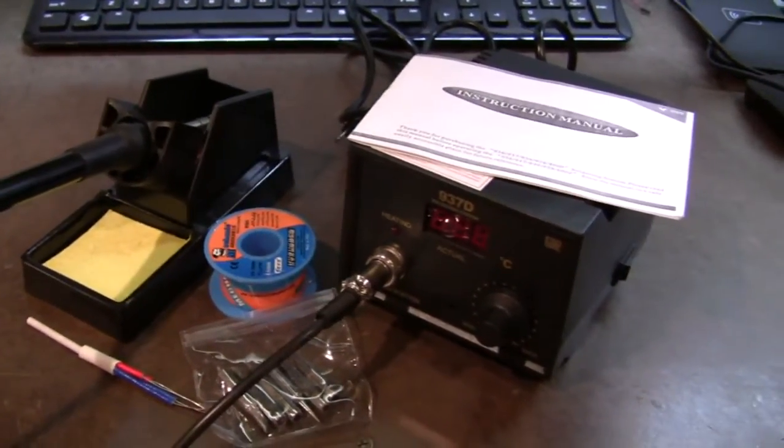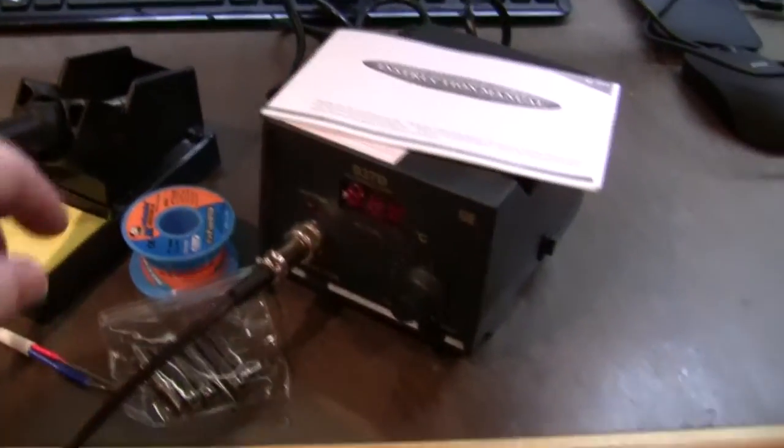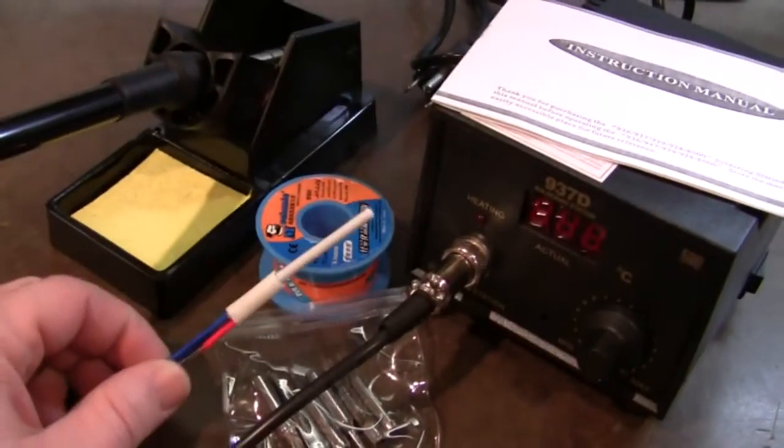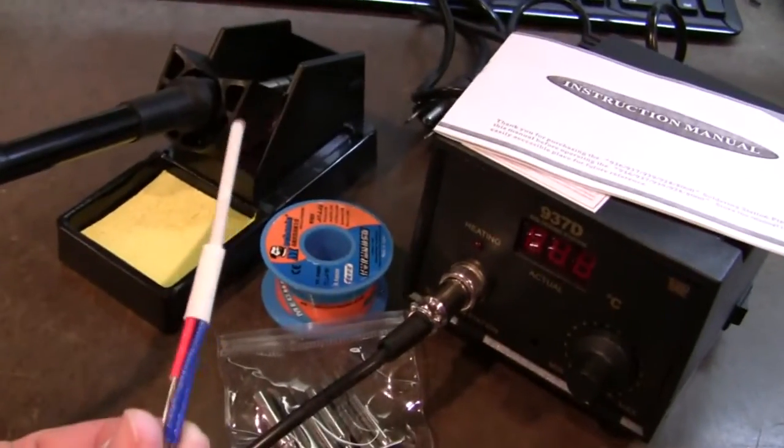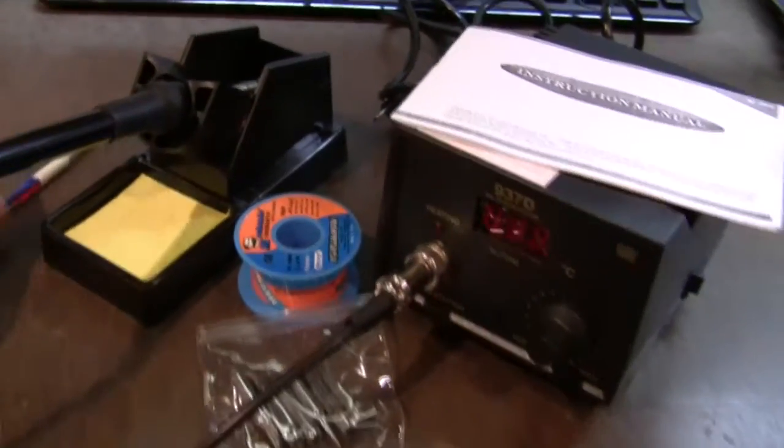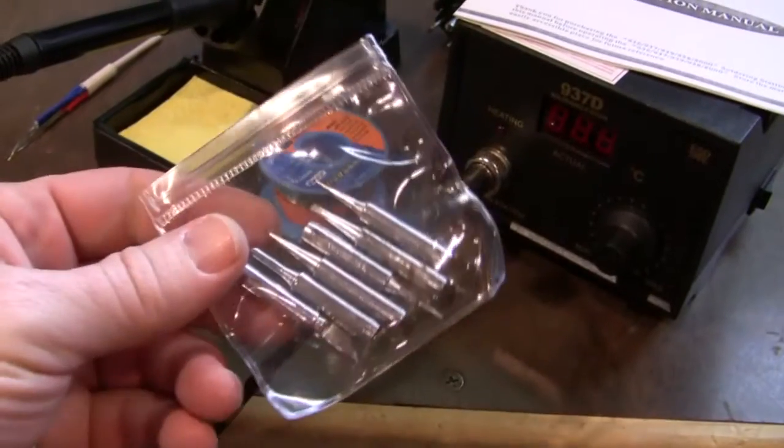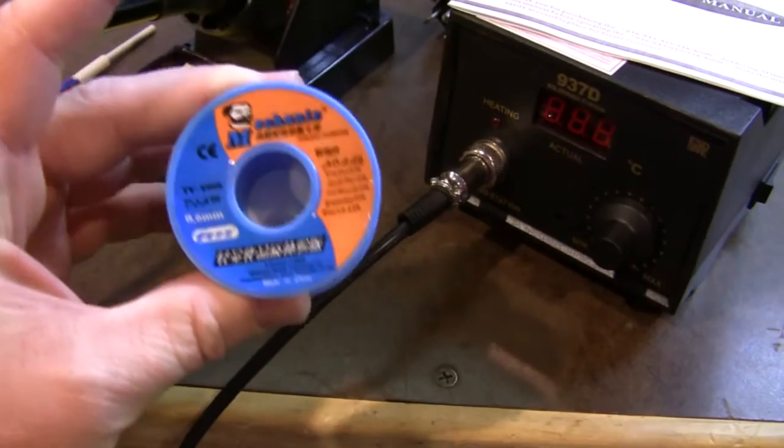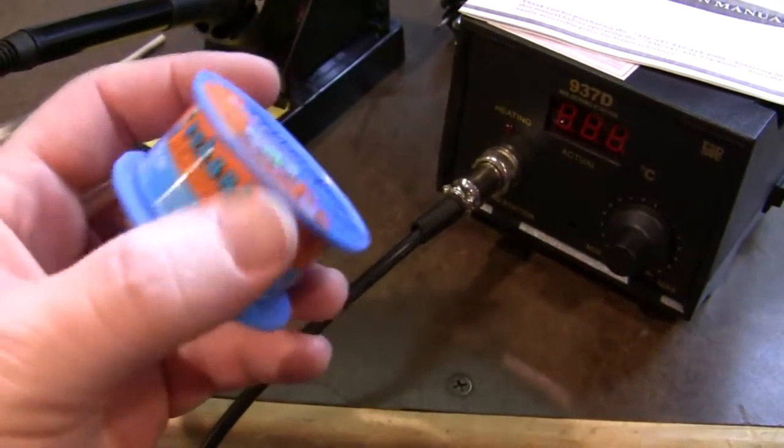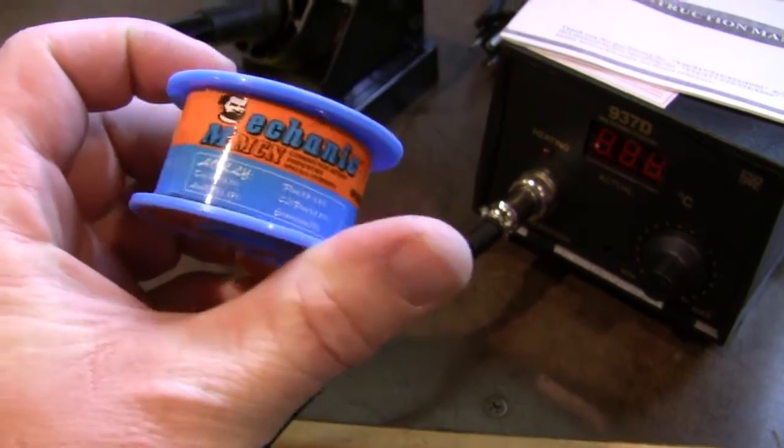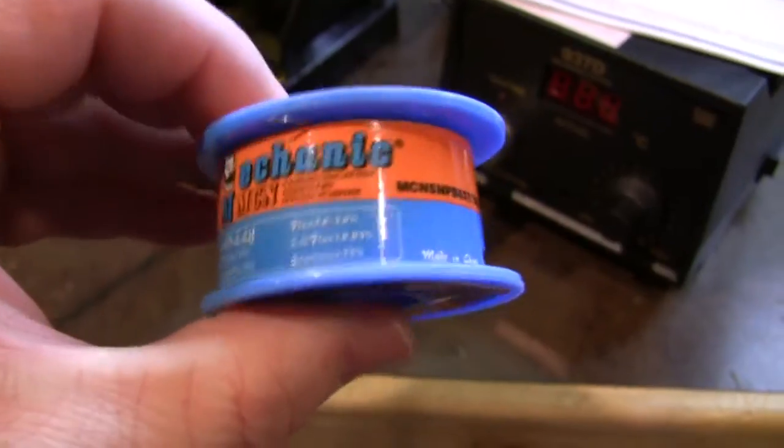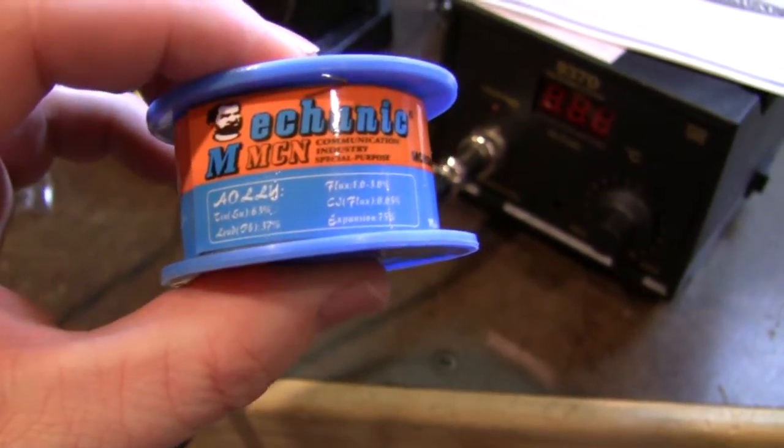I'm not doing an unboxing because I hate unboxings. Anyway, it came ready to go. For some reason, even the Hakko that I bought didn't come with one of these, but it came with a spare heating element, came with a bunch of tips, and came with a few ounces of 0.6 millimeter lead solder. It's 63-37, close to 60-40 stuff.